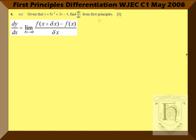We're going to start by defining our function as f(x) = 5x² + 3x - 4, giving us f(x + δx) = 5(x + δx)² + 3(x + δx) - 4.